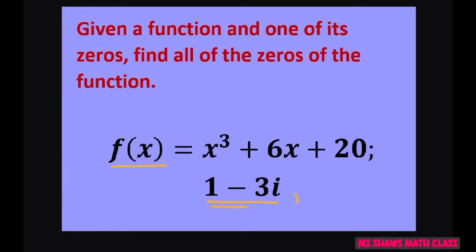According to our complex conjugate theorem, if 1 minus 3i is a zero, then so is 1 plus 3i. So we already found 2, and we can have one more here because we have a degree of 3.